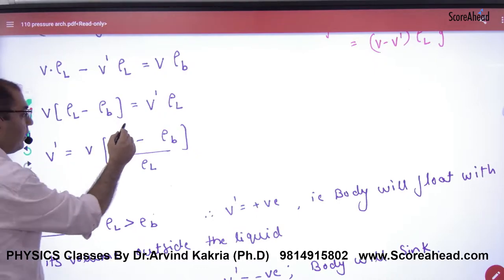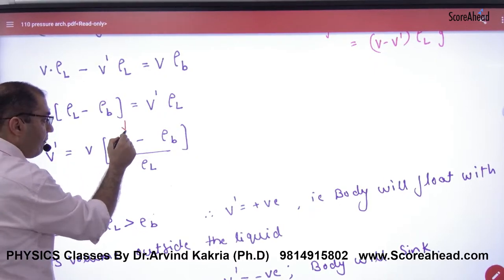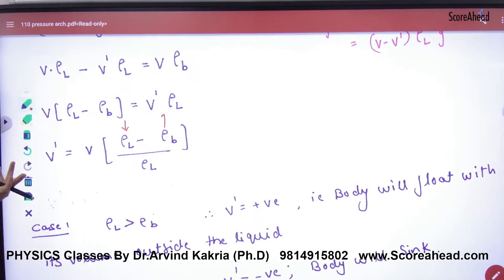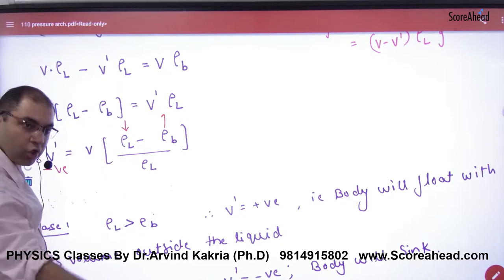And if the density of liquid and the body is less, the density of liquid is less, the density of water is less, so what will V dash? Negative. Negative means the body will sink.